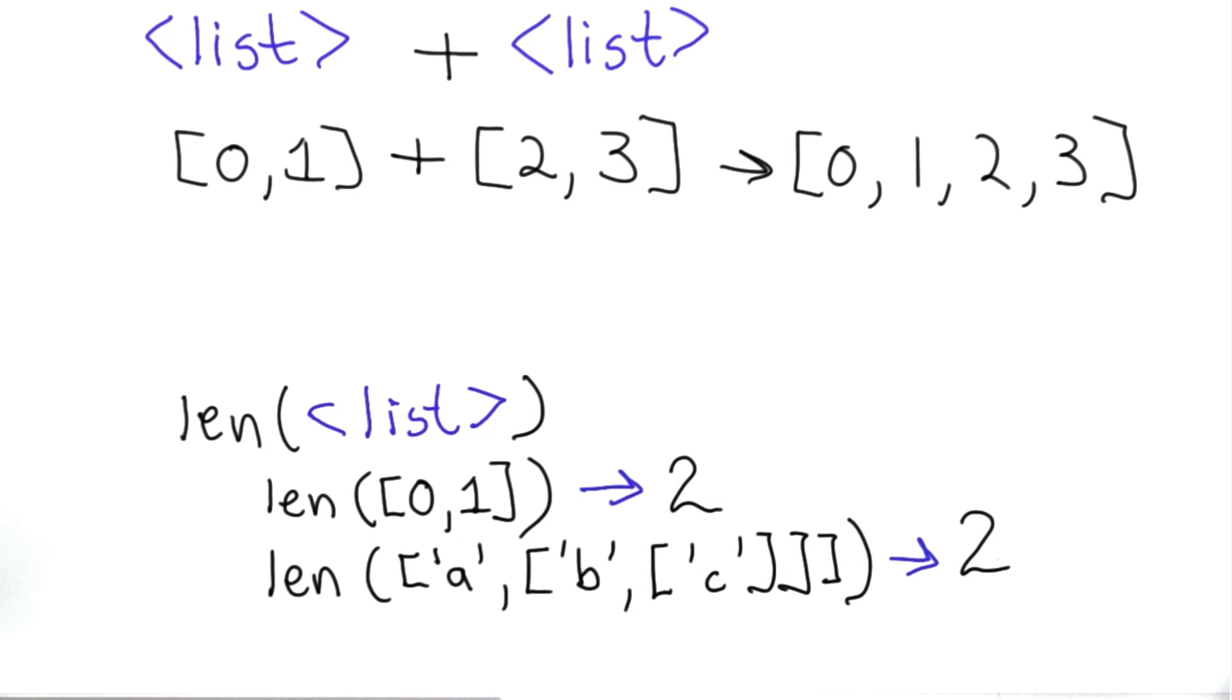We can also use len on a string, and the output will be the number of characters in the string. In this case, the string Udacity has 7 characters, so the output is 7.